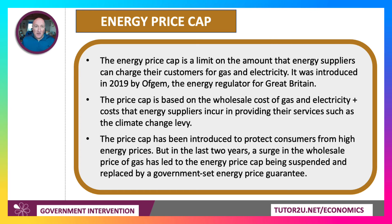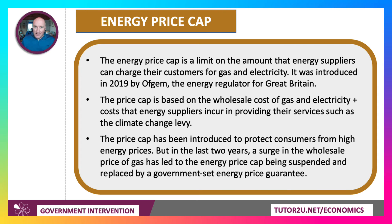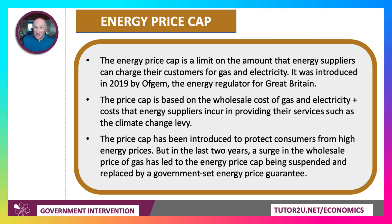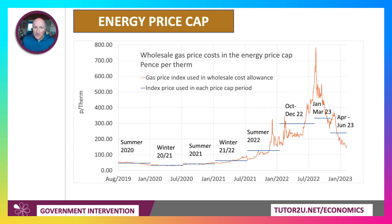Let's look at another good example of a maximum price — the energy price cap, brought in in 2019 by Ofgem, which is the industry regulator for the energy markets. The price cap is based on the wholesale cost of gas and electricity, and is designed in theory to protect consumers from high prices. What we saw in 2021–22 was a huge surge in world energy prices — the wholesale price of gas shot up and the energy price cap was suspended and replaced by a government-set energy price guarantee. The chart shows the wholesale gas price and the energy price cap index used in each price cap period.